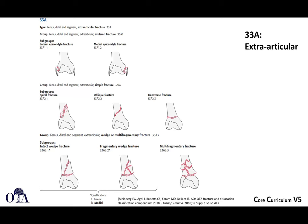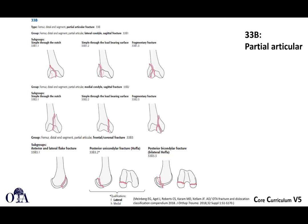Locked plating is not typically required for B-type fractures unless osteoporosis is present. The B3 Hoffa fractures don't have as much non-articular bone to work with, so buttress plating isn't always accessible; these are frequently treated with screws alone. The C-type complete articular fractures must be opened and fixed with ORIF when there is displacement of the articular surface, though some simple non-displaced C-types may not need opening.